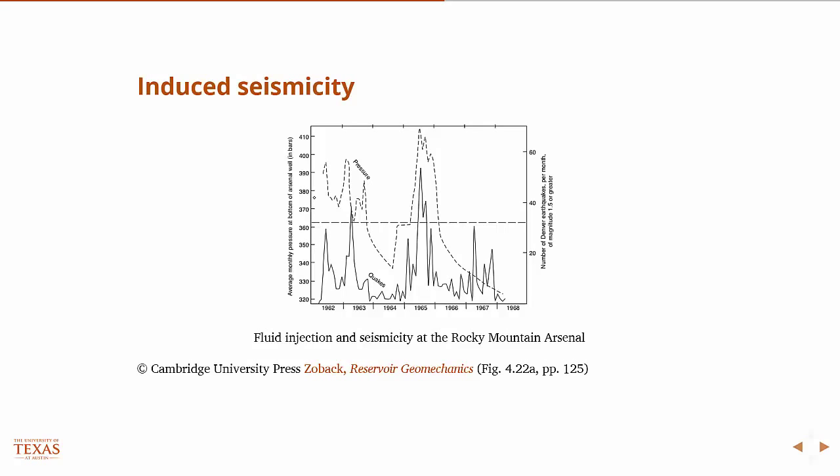What you see here is a plot - the axis on the left, the dotted line, is the downhole pressure of injection versus time. So you're talking about over several years of constant injection, and the right-hand axis associated with the black lines are the number of earthquakes. You can see there appears to be a clear correlation with fluid injection and the number of earthquakes.